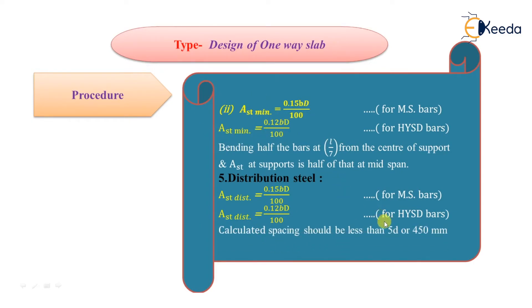The spacing criteria has changed for distribution steel. It should be less than 5D or 450 mm, whichever is less. That means we calculate spacing for distribution steel first, then 5D, then 450 mm. Among these three values, we pick the least value.